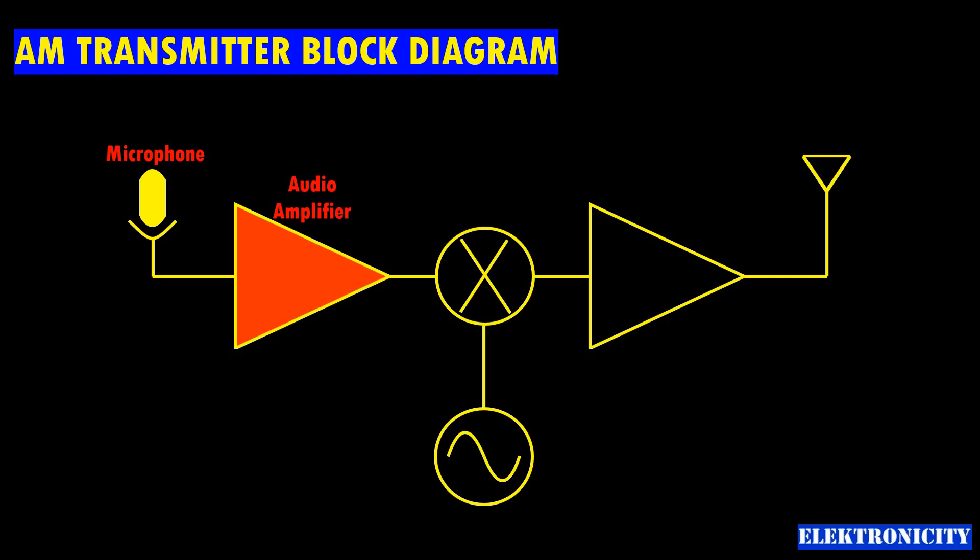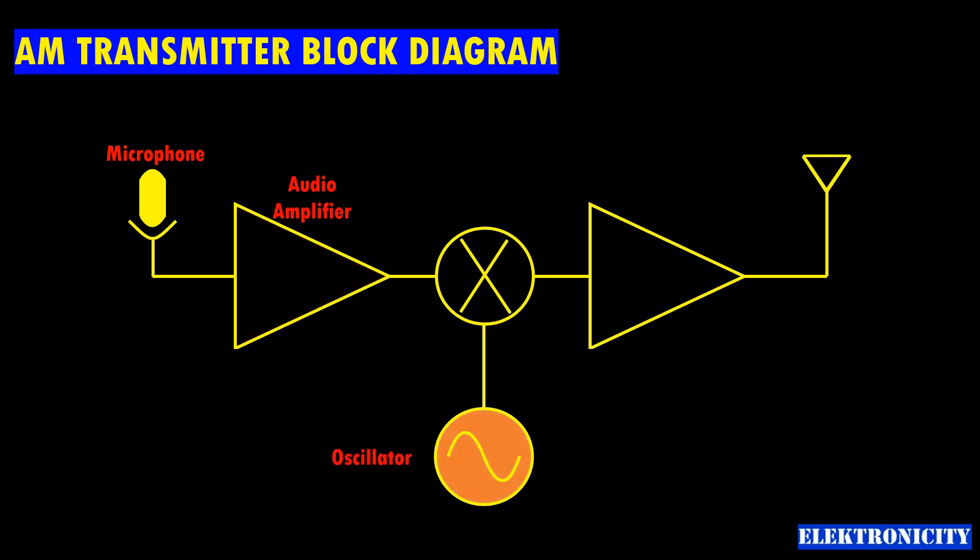Then there is an oscillator which generates a high frequency carrier signal. The carrier signal gets modulated with an audio signal with the help of a modulator circuit which combines the audio signal and the carrier signal, varying the carrier amplitude.